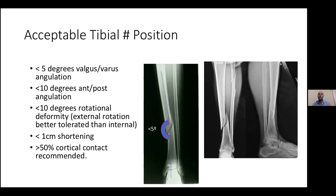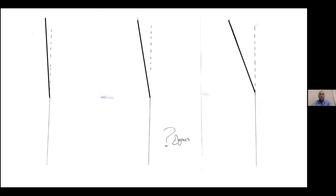You can accept up to one centimeter of shortening and up to fifty percent cortical contact — so bones need to overlap at least fifty percent, which is quite forgiving. The critical one is less than five degrees on the AP. I made a drawing to demonstrate how tight five degrees is — the first picture is six degrees, already over the limit; the middle one is eleven degrees; the last is about twenty-three degrees. If you look at it and it seems fine, go and measure it, because five degrees is the cutoff.